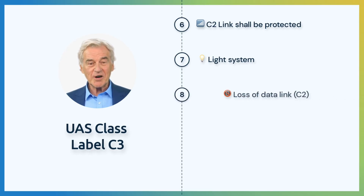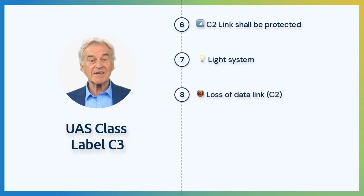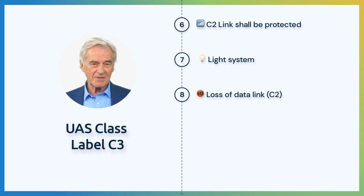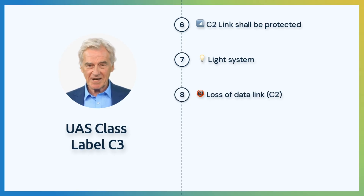In case of a loss of a data link, the UA shall recover the data link or terminate the flight in order to reduce risk to air and ground third parties.